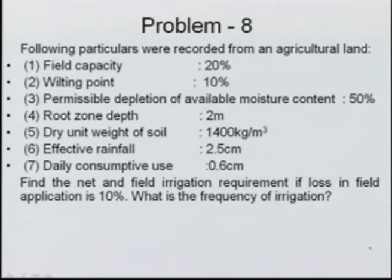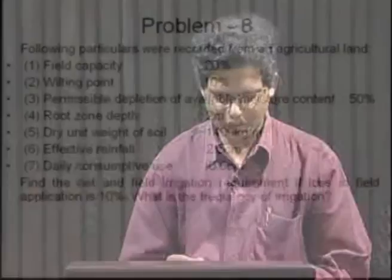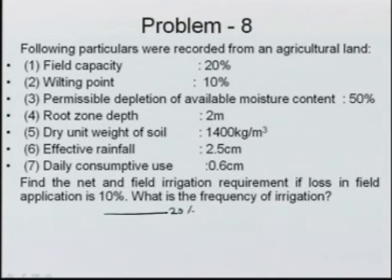Problem 8 data: field capacity = 20 percent, wilting point = 10 percent, permissible depletion of available moisture = 50 percent, root zone depth = 2 meter, dry unit weight of soil = 1400 kg/m³, effective rainfall = 2.5 cm, daily consumptive use = 0.6 cm. Find net and field irrigation requirement if field application loss is 10 percent, and find frequency of irrigation.